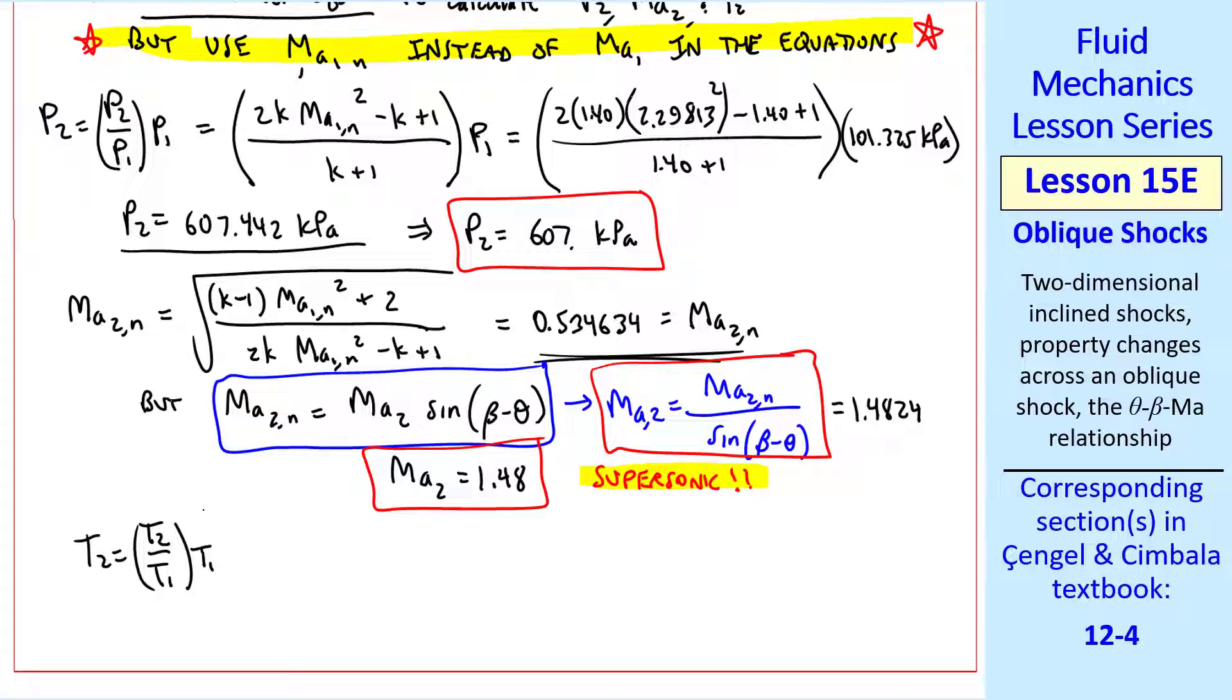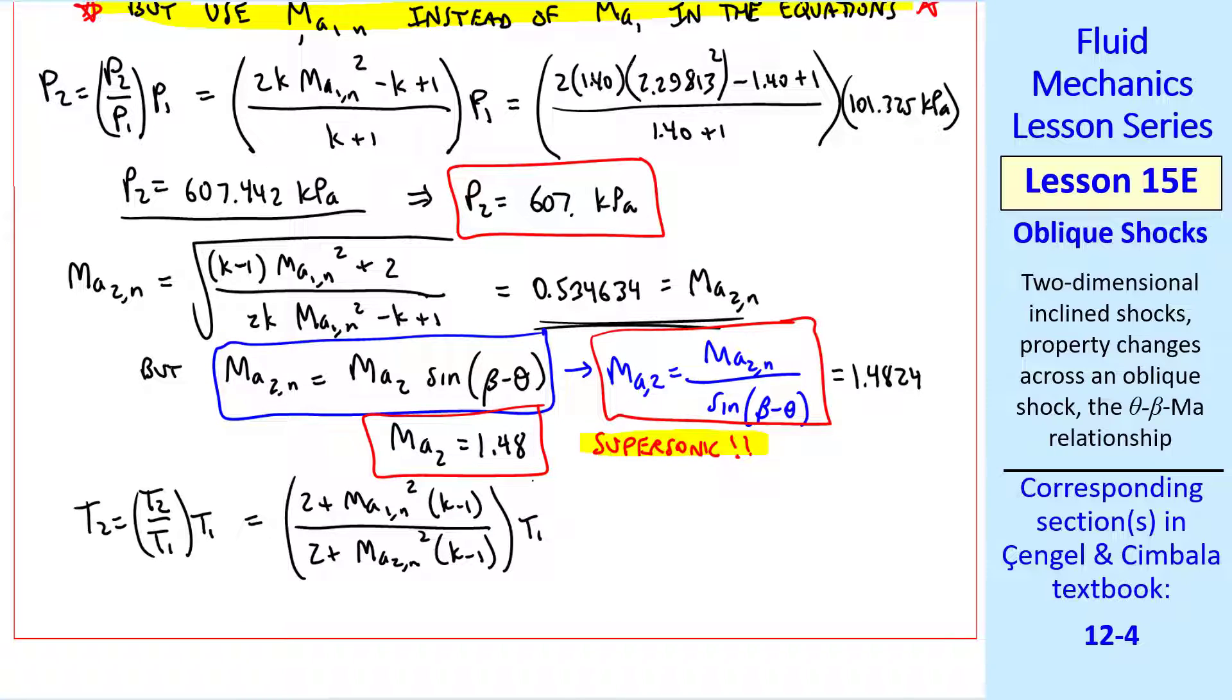Finally, T2 equal T2 over T1 times T1, where again we use the normal shock equation, but with the normal components. I get 560K.